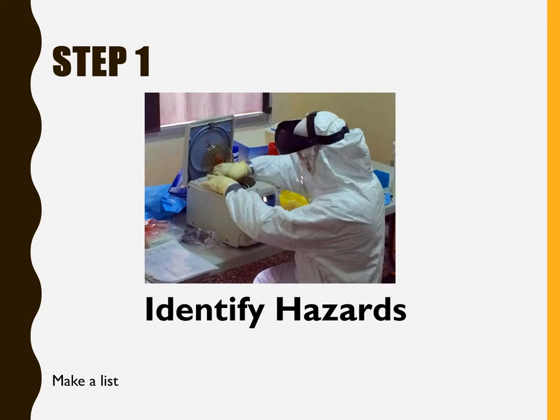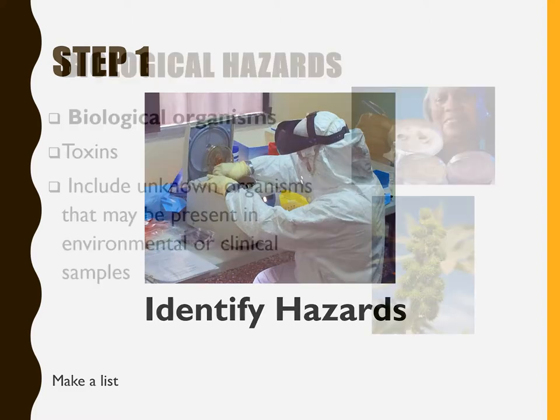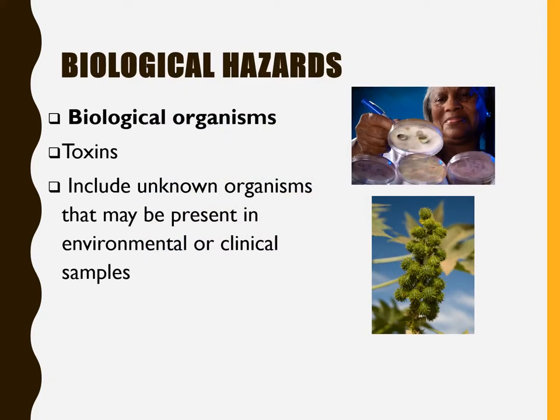Step 1: Identify the hazards and make a list. Examples of hazards would be biological hazards like pathogenic organisms, toxins, and unknown organisms that may be present in the environment or clinical samples.